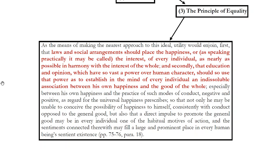And secondly, that education and opinion, which have so vast a power over human character, should so use that power as to establish in the mind of every individual an indissoluble association between his own happiness and the good of the whole. So two things: first, the way we organize society needs to make it such that the happiness of everyone is tied up with the happiness of the group — we need to make it such that we can't have people who profit when others suffer, or people who can cheat their way to satisfying their own interests and causing others to lose. Mill is in favor of perhaps drastic changes to the way society is organized that would make such things impossible.